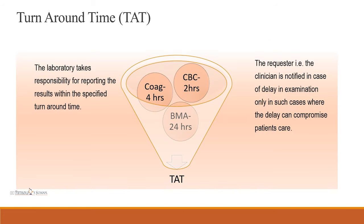Turnaround time is the time from specimen collection to when the report goes back to the clinician. Turnaround time for CBC is 2 hours, for coagulation it is 4 hours, and for bone marrow aspirate it is 24 hours. The laboratory takes responsibility for reporting results within the specified time. The requesting clinician is notified in case of delay only when that delay can compromise patient care.